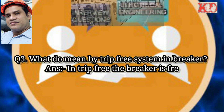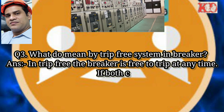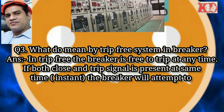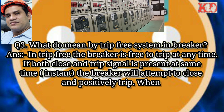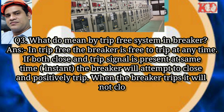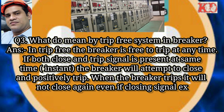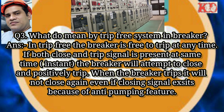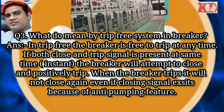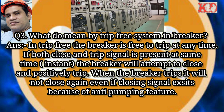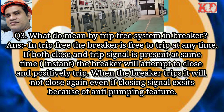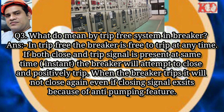Question number three: what do you mean by trip free system in a breaker? Answer — in trip free, the breaker is free to trip at any time. If both close and trip signals are present at the same time, the breaker will attempt to close and positively trip. When the breaker trips, it will not close again even if the closing signal exists, because of the anti-pumping feature.